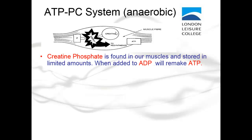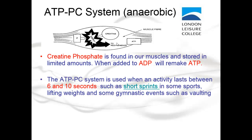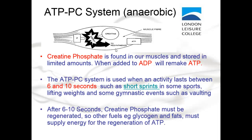Creatine phosphate is stored in limited amounts in the muscles. When added to ADP, it remakes adenosine triphosphate. The ATP-PC system is used when an activity lasts between 6 and 10 seconds, such as short sprints, lifting weights, and gymnastic events like pole vaulting. After 6 to 10 seconds, creatine phosphate must be regenerated, and other fuels such as glycogen and fat must supply energy for the regeneration of ATP.